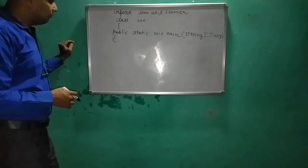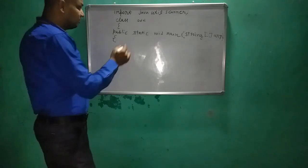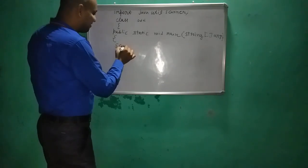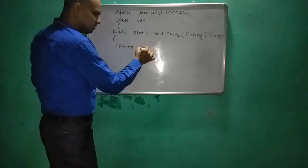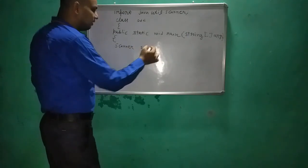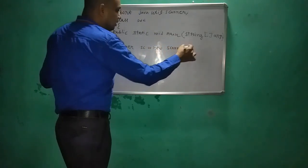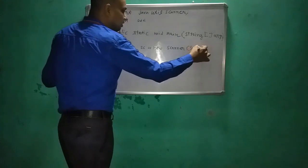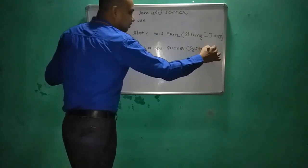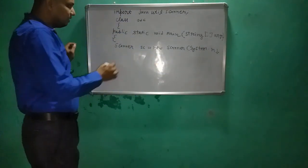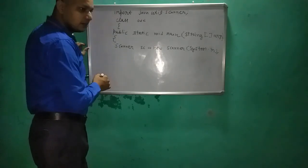After including the main function, we need to create an object of the Scanner class. We write 'Scanner sc = new Scanner(System.in)' — 'sc' is the identifier, and 'System.in' is passed as the argument to the Scanner constructor.